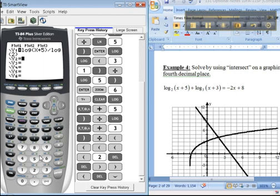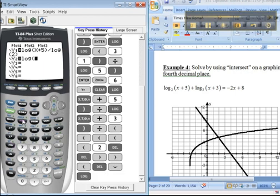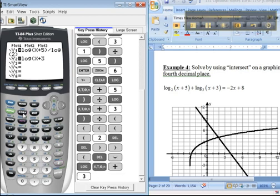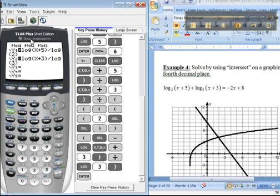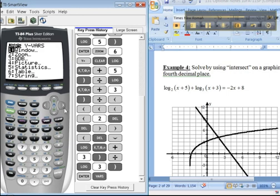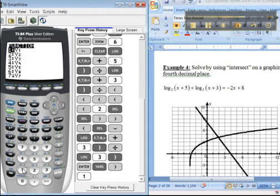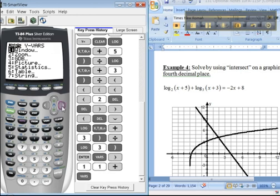So, log x plus 3, close parentheses, divided by the log of 3, close parentheses. Now, what I really want to do is add these two. So, I'm going to make this variables, y variables, function, y1 plus variables, y variables, function, y2. Okay.